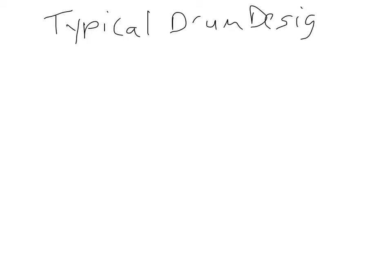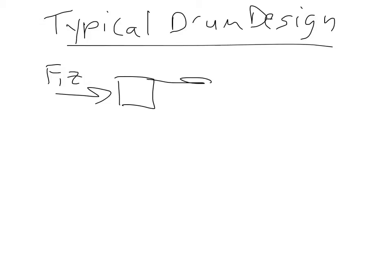typical flash drum design where we're trying to separate two or more materials, and we have here our flash drum F, Z. And we also have here two streams, V and Y for the vapor. V is the flow rate of the vapor, Y is the molar concentration,